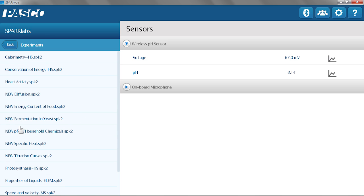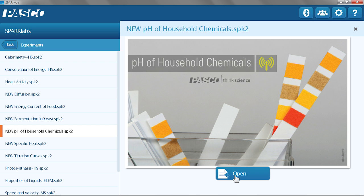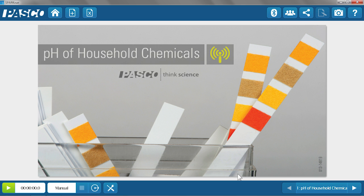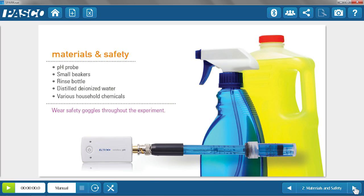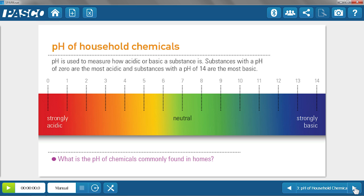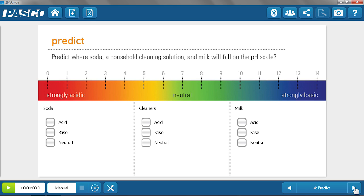So I'm going to hit Experiments. I'm going to hit pH of household chemicals. I'm going to hit Open. And the great thing about the SparkLabs is it gives the students some more structure and background. It tells them about the materials and safety information, some theory about pH, a little bit of a prediction question to get their minds thinking about what should be happening or what they can expect.